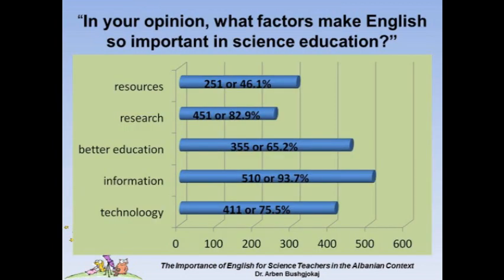When posed with the question of what factors make English so important in science education, the focus groups provided the following most frequently cited answers out of 10 possible responses: Technology, marked by 411 subjects or 75.5%; Information with 510 or 93.7%; Better education with 451 or 82.9%; Research with 251 or 46.1%; and Resources with 310 or 56.9% of responses. The results show that the most important areas of life are factors contributing to English's importance, since English plays a very significant role in these fields as related to science education.